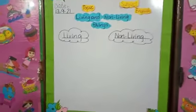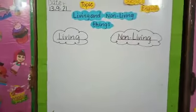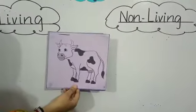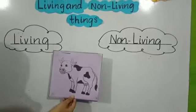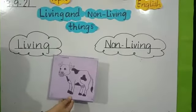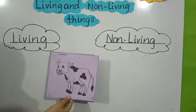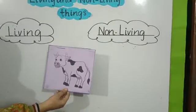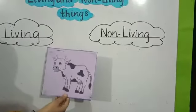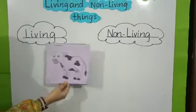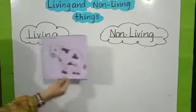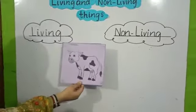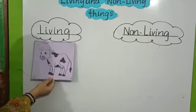Now I will show you a picture. Which picture is this? It's a cow. I will tell you — is the cow a non-living or a living thing? The cow can move from itself. It starts small and grows big. So this is a living thing. We will paste it in the living things column.